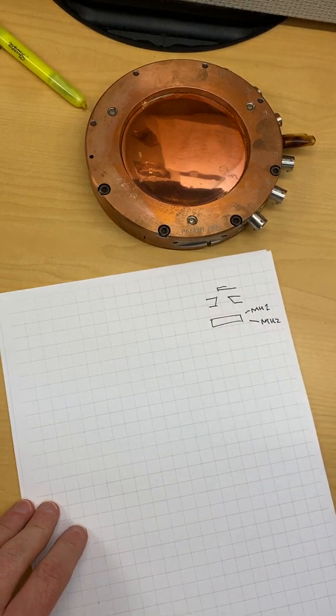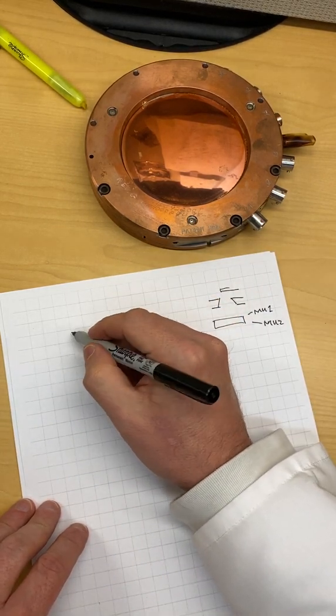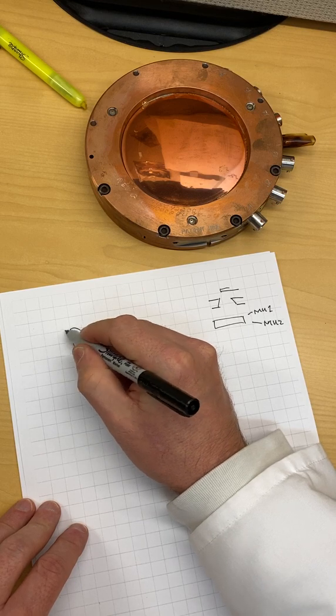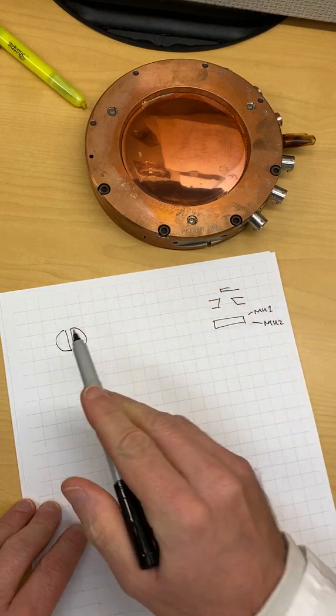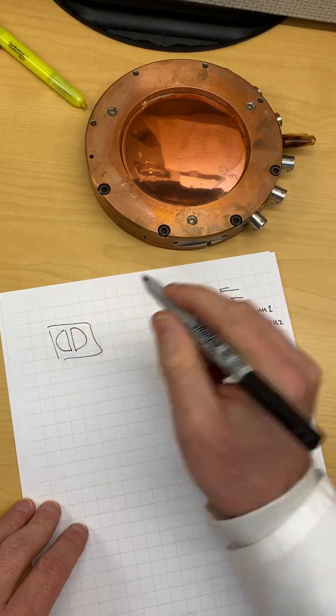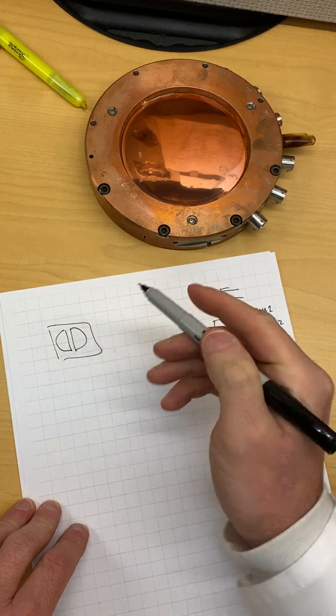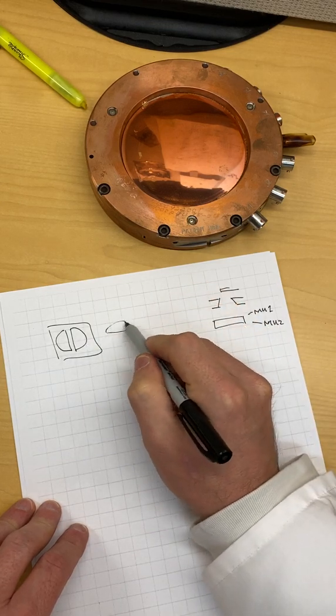Another thing that the monitor unit chamber does is that it measures the symmetry of the beam. So the chamber will be split up - you'll have two different sides to it inside there. So inside here are two D-shaped collectors, one's going this way and then in the other layer you'll have one going the other way.